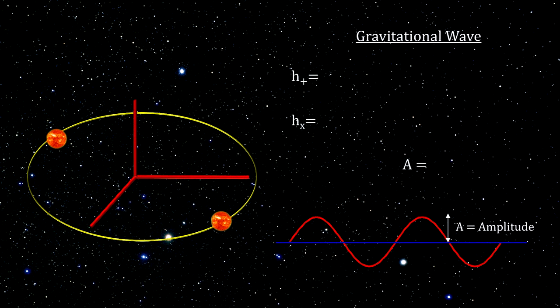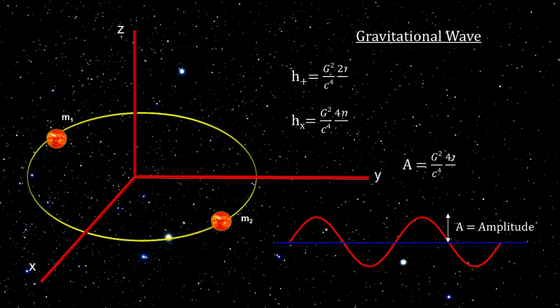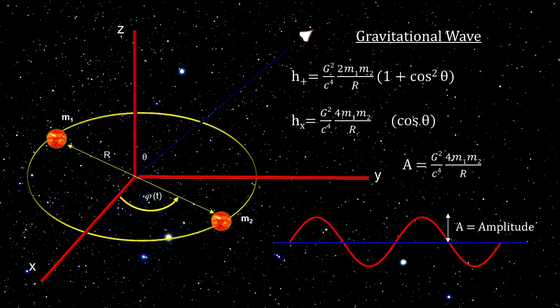We also see that the polarization and maximum gravitational wave amplitude depend on the masses of the two objects, the distance between them, their rotational velocity, the viewing angle, and how far away the system is from the observer.